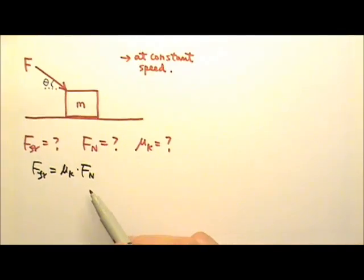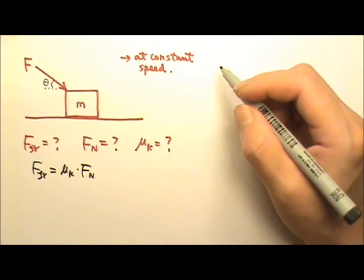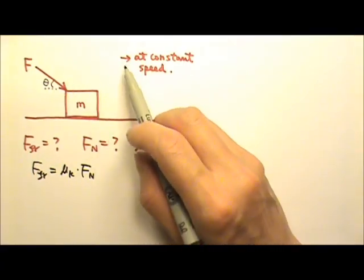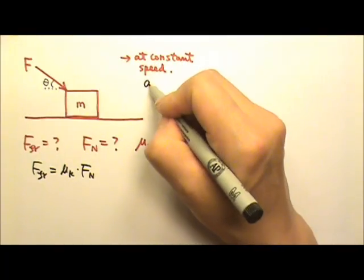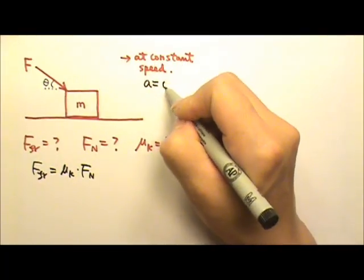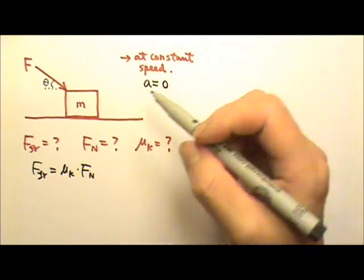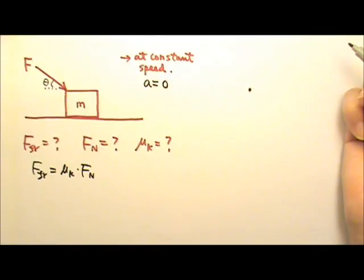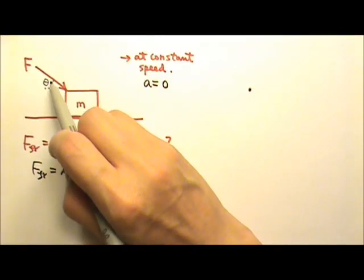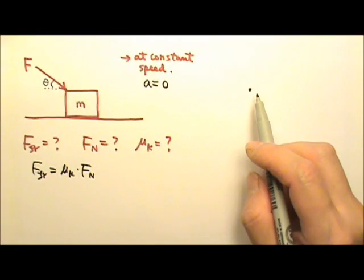So here we will follow the problem-solving procedures. Direction of acceleration: if the box gets pushed to the right at a constant speed, that means the acceleration is zero — no direction. Now let's draw the force diagram. We have this slanted force, and we're going to need to separate horizontal and vertical directions.